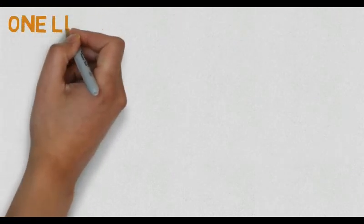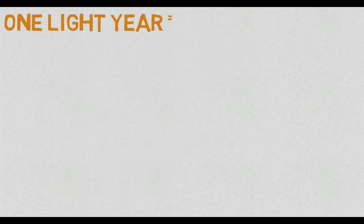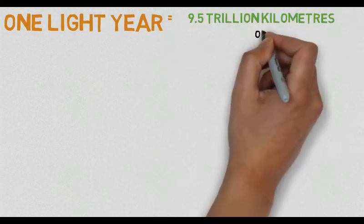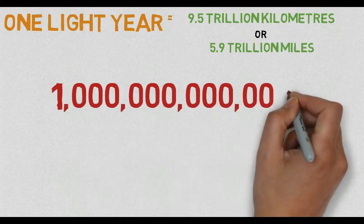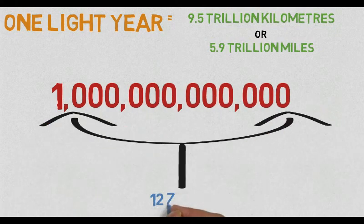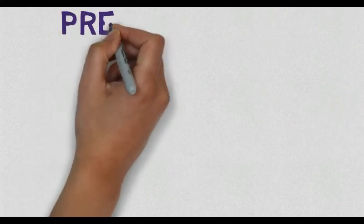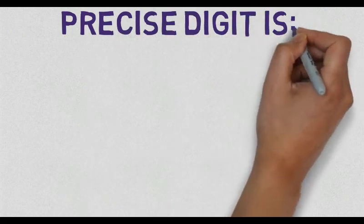Generally, one light year is equivalent to 9.5 trillion kilometers or 5.9 trillion miles, and one trillion contains 12 zeros behind itself. Remember this, guys. To be more precise, one light year is equivalent to 9,460,730,472,580,839,000 meters, and that's amazing.